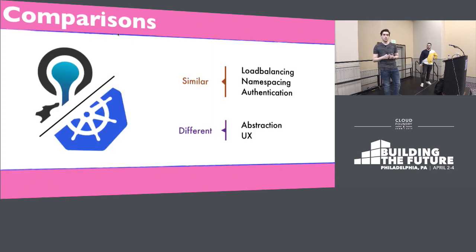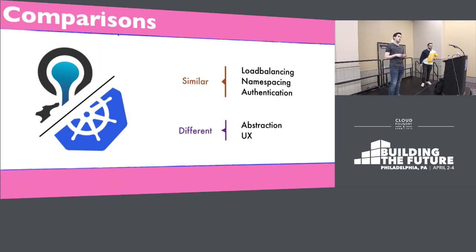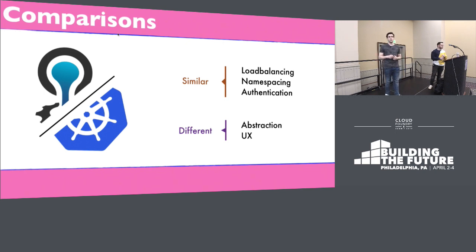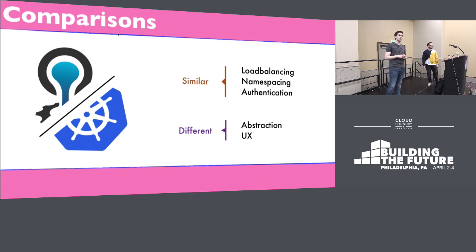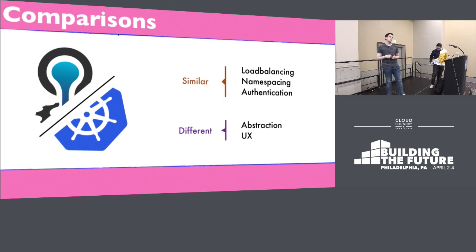The CF versus Kubernetes comparisons still have some merits, mainly because Kubernetes has so many features common to PaaS offerings like Cloud Foundry — they both provide different methods for load balancing, both have namespacing capabilities, and different authentication strategies. But fundamentally the platform abstraction is placed at a different level. For Cloud Foundry, the abstraction is at the application level, while Kubernetes places it at the container level, which is much lower. And the user experience differs greatly — Cloud Foundry lets you just push your app without caring about the backend, while Kubernetes requires awareness of the platform's inner workings.